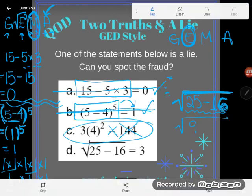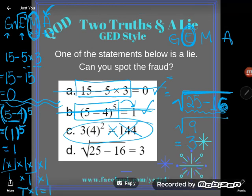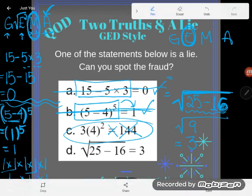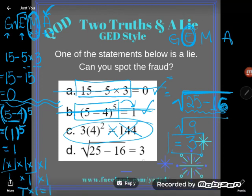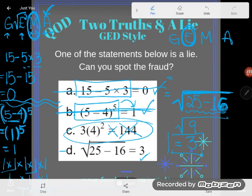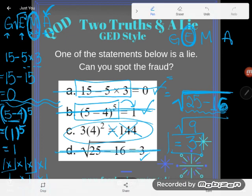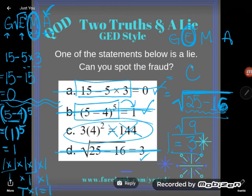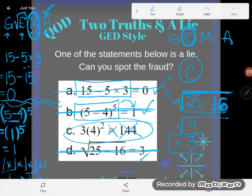So 25 minus 16 is 9. And now I'll take the square root of 9. And the square root of 9, what number times itself is equal to 9? Well, that's 3. Notice my square root symbol is gone now because I took the square root. It's done. The answer is just 3. There's just 3. That was the correct answer, not a lie. So what was the lie here? What was the fraud? It was C. If you have any questions about this or any other GED topic, be sure to drop it in the comments and I'll do my best to answer it.